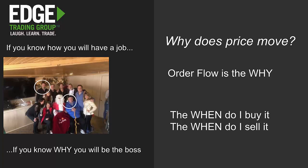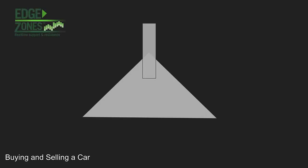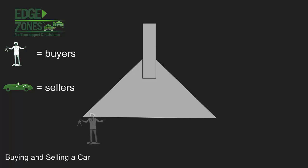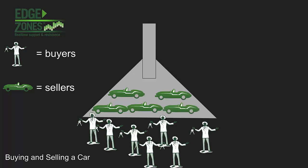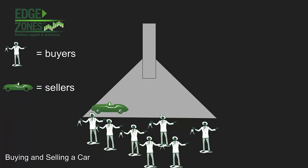I like to use metaphors and stories to give a sense of how order flow pertains to trading. Let's take a funnel and turn it upside down. If these individuals represent buyers and these cars are sellers, you've got a certain number of buyers at the bottom — the mouth of the funnel — where buyers and sellers are doing business, going back and forth in that area.